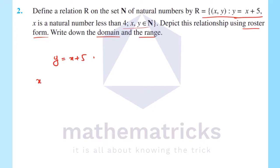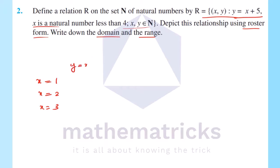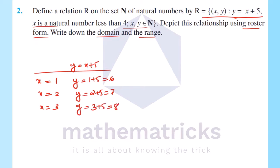Since x is a natural number less than 4, x takes values 1, 2, and 3. When x equals 1, y equals 1 plus 5 equals 6. When x equals 2, y equals 2 plus 5 equals 7. When x equals 3, y equals 3 plus 5 equals 8. The corresponding ordered pairs are (1,6), (2,7), (3,8).